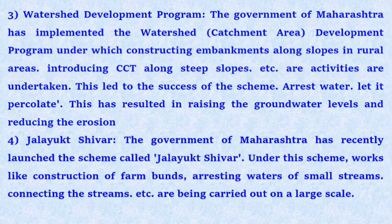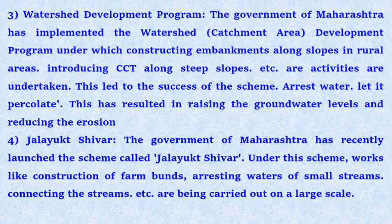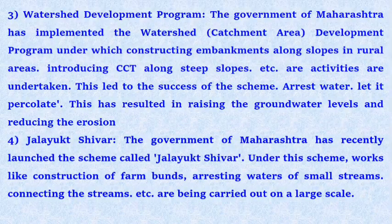Third, watershed development program. The Government of Maharashtra has implemented the watershed catchment area development program, under which constructing embankments along slopes in rural areas, introducing CCTs along steep slopes, etc., are undertaken. This has resulted in rising ground water levels and reducing erosion. The Government of Maharashtra has also recently launched the scheme called Jalyukta-Shivar, under which works like construction of farm bunds, arresting waters of small streams, and connecting streams are being carried out on a large scale.